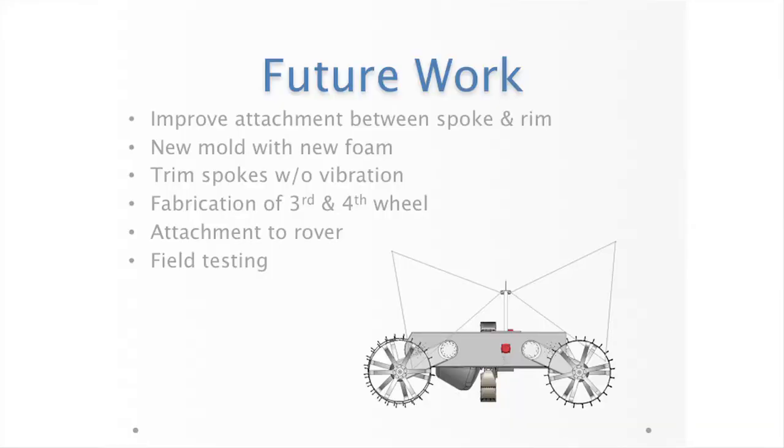So for future work on this project, first of all, as I just said, we have some ideas about how we can improve that adhesion between the spokes and the outer rim. We need some new molds with the high-temperature foam. The foam we're using for our current molds actually was not rated for the temperature 250 degrees that we were heating it at, causing it to actually shrink during the vacuum and heating process.